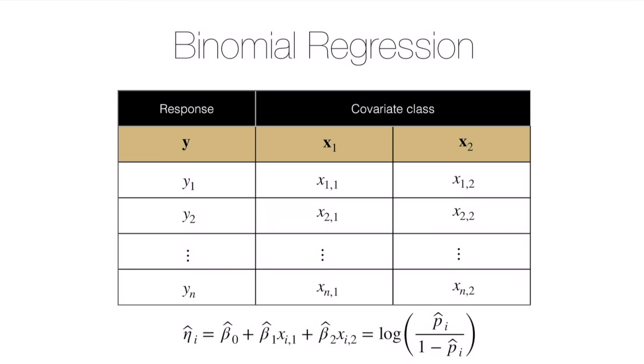The interpretation holds for the estimates or for the true parameters themselves, with the caveat that the estimates are not exactly those parameters but have nice properties like they're unbiased and they're consistent.